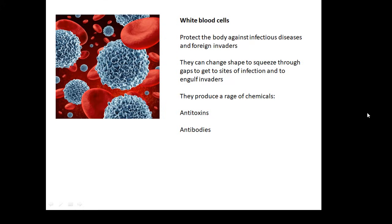They produce a range of chemicals. They produce antitoxins because some of these pathogens produce poisons, toxins. Then this is the antidote, the antitoxins. And they produce antibodies. Particular antibodies will attack particular pathogens.